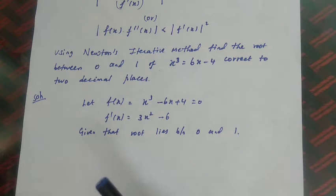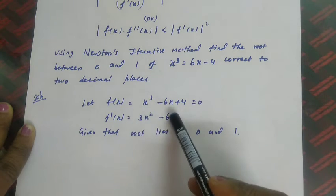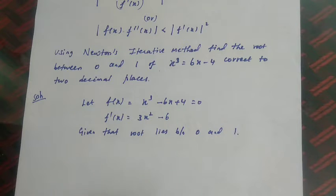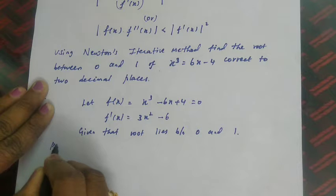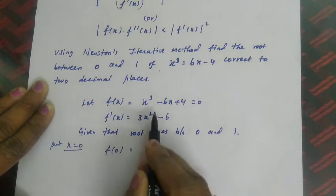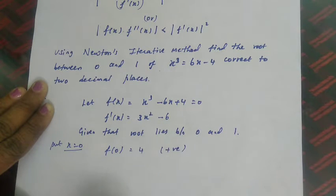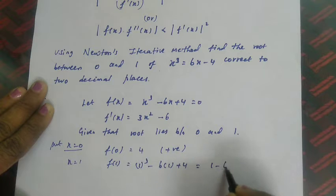The root lies between 0 and 1 as given in the question. If it were not given, we would substitute x = 0, 1, 2, etc. into f(x) and look for a sign change. Here, f(0) = 0 - 0 + 4 = +4 (positive), and f(1) = 1 - 6 + 4 = -1 (negative), confirming opposite signs.